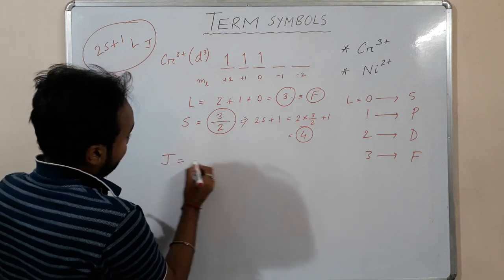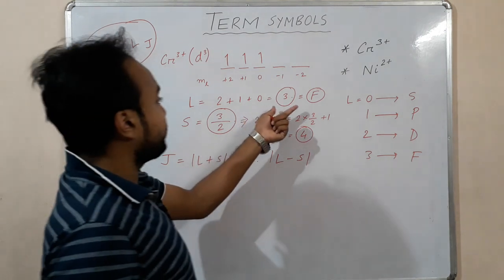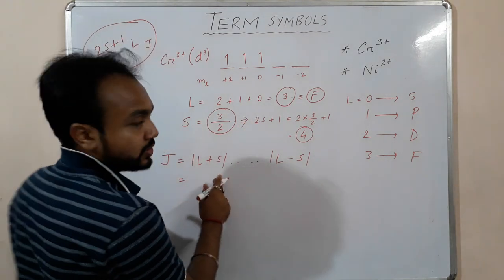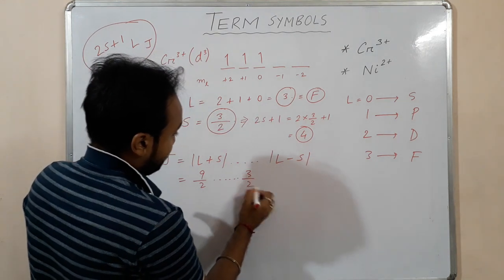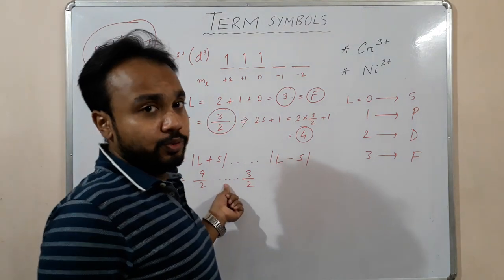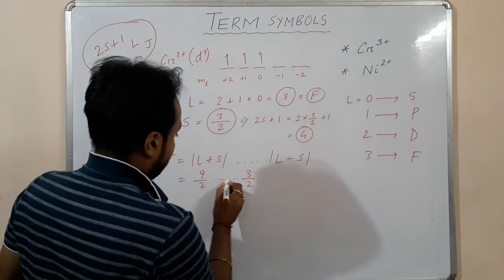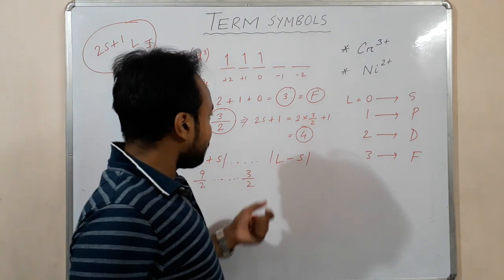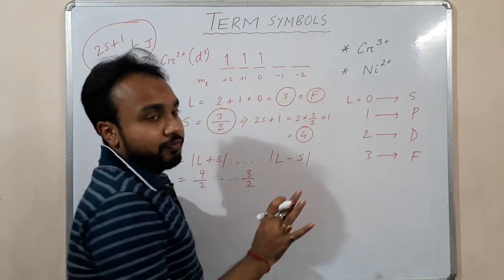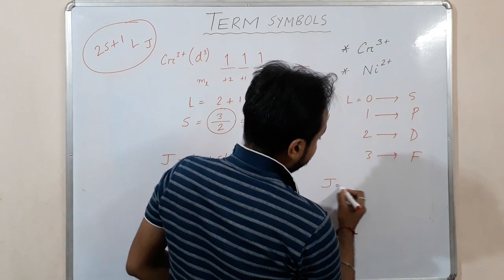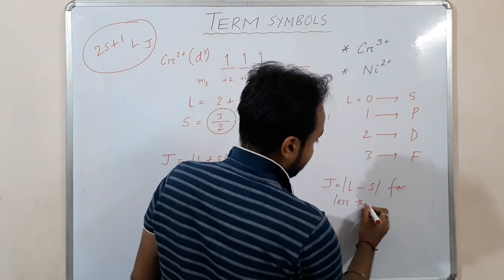The J value varies from L+S to L−S. Our L value is 3 and S is 3/2, so J ranges from 3+3/2 = 9/2 down to 3−3/2 = 3/2. Now, since d³ is less than half-filled, for a less-than-half-filled configuration we take J = L−S.